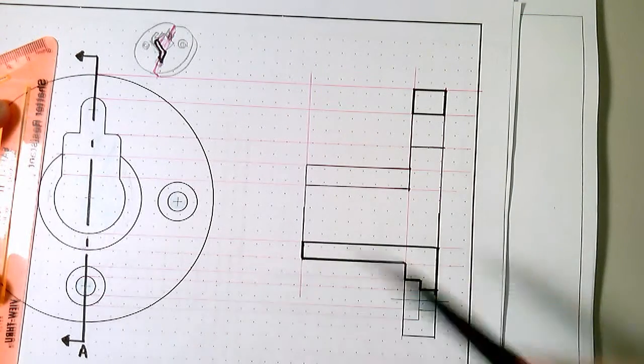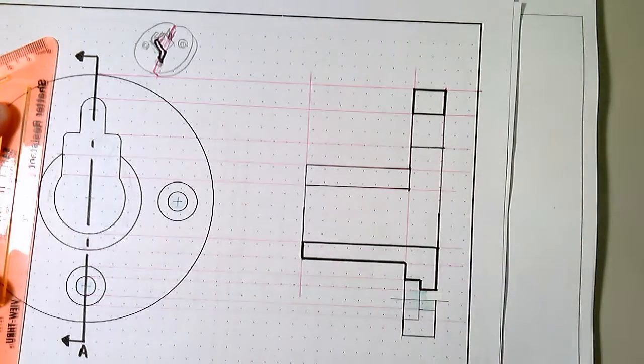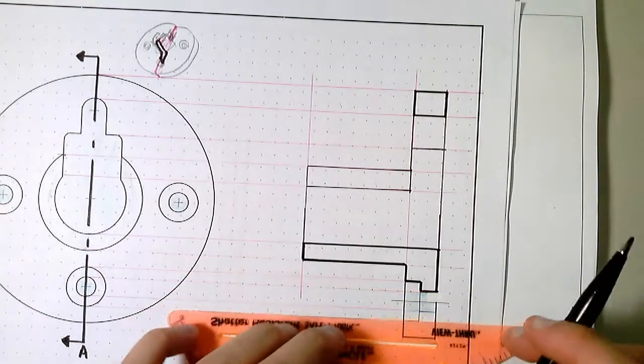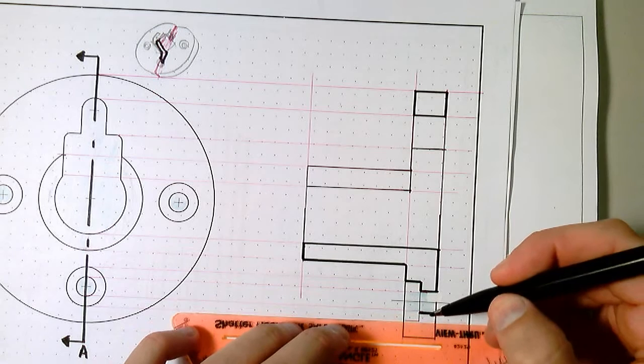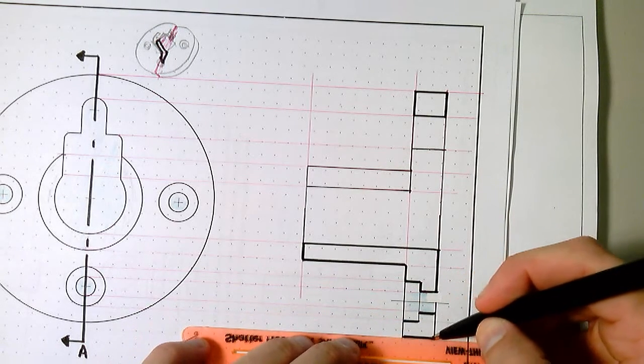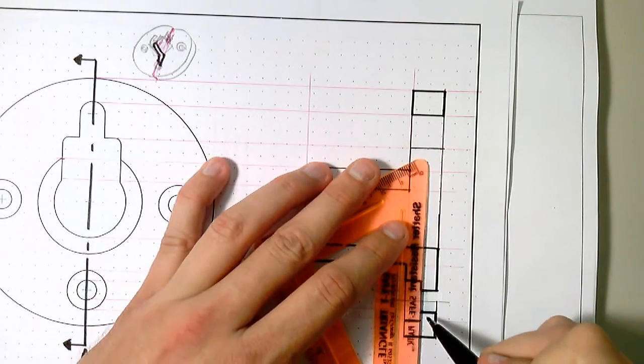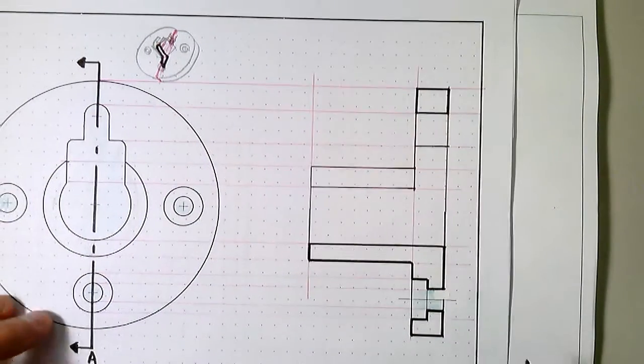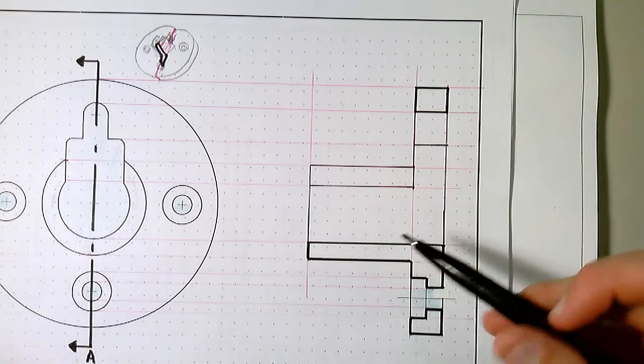And finally, we cut through this last portion. There's nothing down here in the middle. There shouldn't be any lines, nothing going through there. So we're only cutting through this portion. Now, we've defined all of our edges. We have the section outlines cut, and it's time to do our hatching.